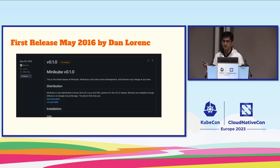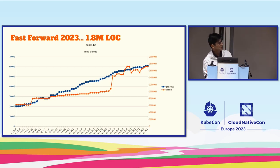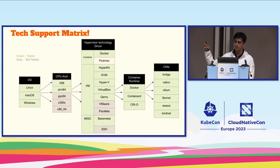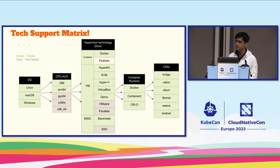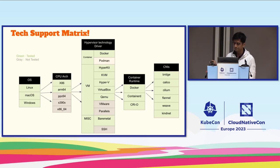The first release was in May 2016. Fast forward to 2023: 1.8 million lines of Golang code — and this does not include the website, documentation code, or comments. That's just the Minikube project repo. The support matrix covers popular platforms, CPU architectures, and all the drivers you could have.